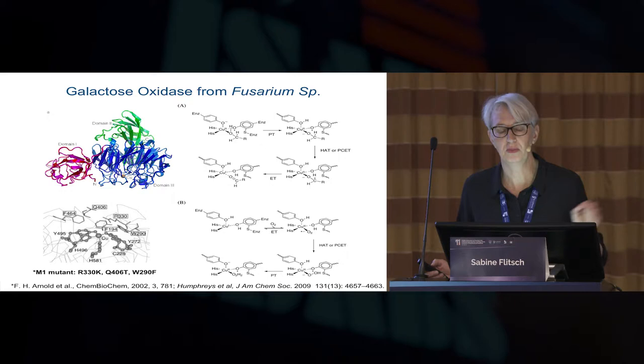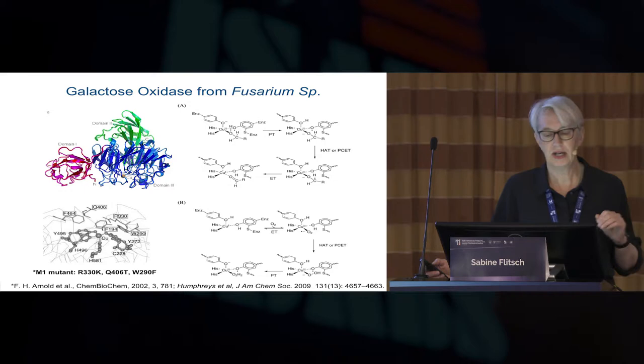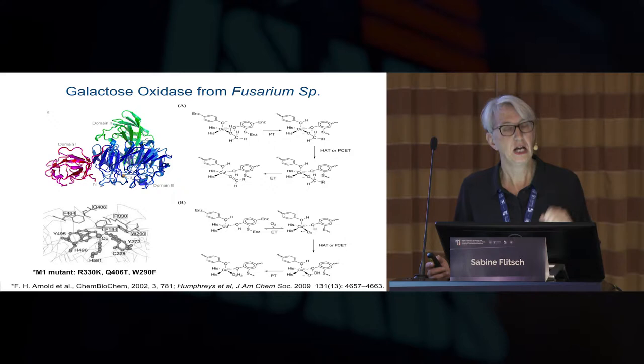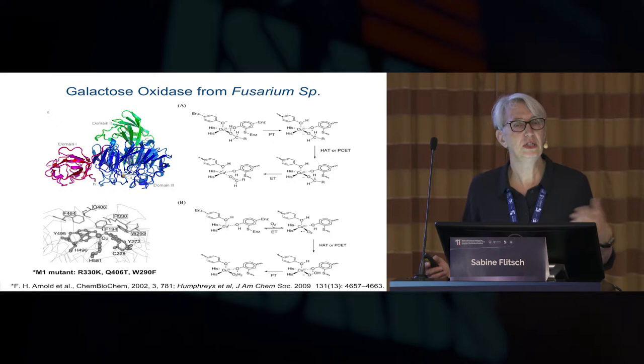Galactose oxidase is well studied. It's got this very shallow active site with a copper center, and that explains why it works so nicely on very complex glycoconjugates — it really is an enzyme that works nicely on surfaces. But it's very highly selective for galactose, so we really couldn't find any useful homologs that would work on other sugars.